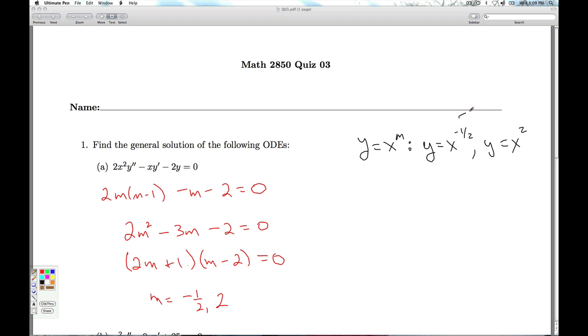Since the exponents here are different, they're linearly independent, which means I get my final answer, y equals c1 x to the minus half plus c2 x squared. So that's the answer for part A.